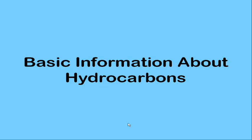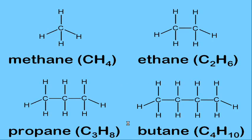This video gives some basic information about hydrocarbons — a substance that contains only carbon and hydrogen. If we assume that the simplest form of hydrocarbon is methane, it makes sense that you have one carbon and four hydrogens. It gets more complicated when you start adding carbons to the chain.